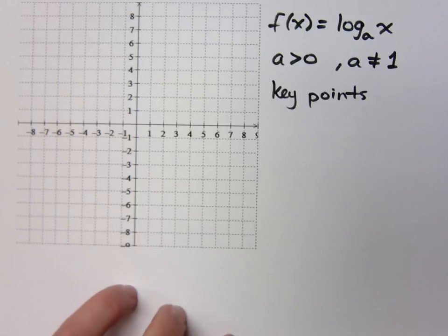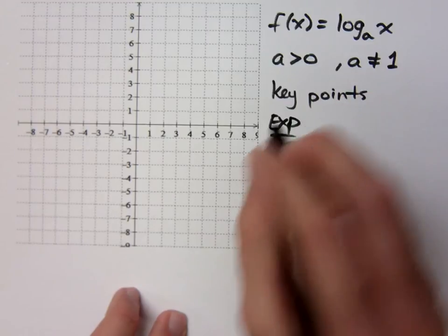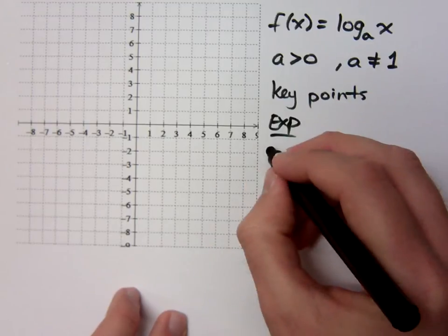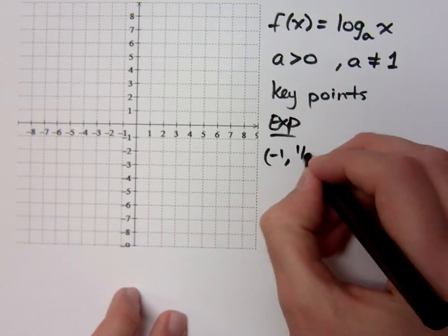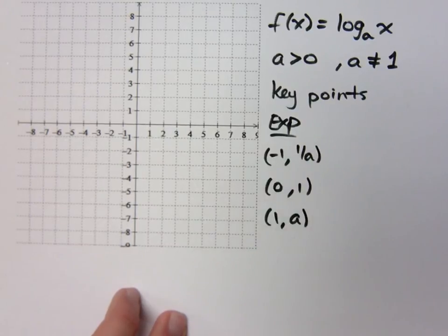Now, we talked about key points for the exponentials, right? For your exponential, your key points were negative 1, 1 over A, 0, 1, and 1, A. Those were your key points, right?